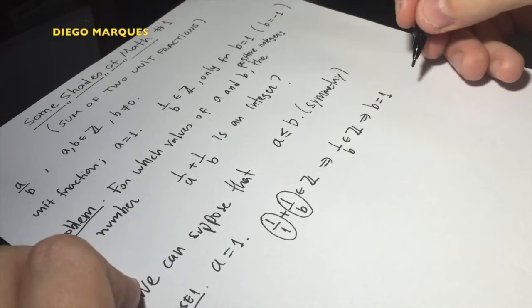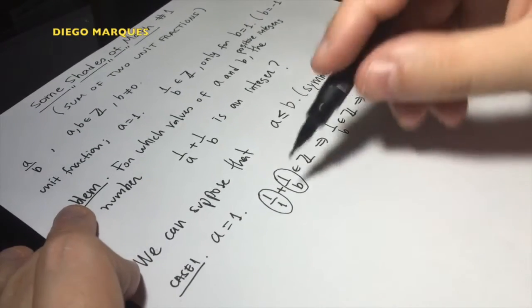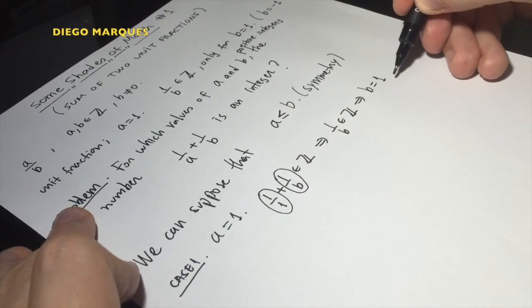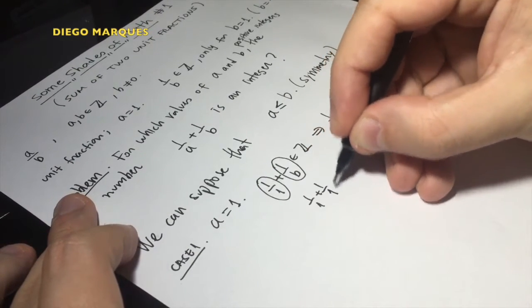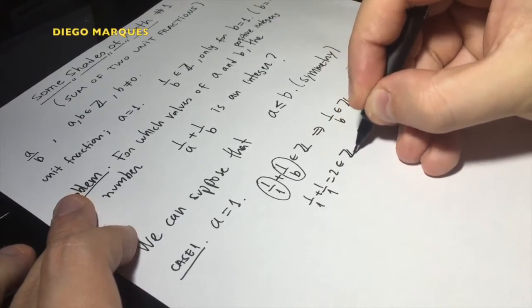And we know that if 1 over b is an integer, this implies that b is equal to 1. Recall that b is positive. So when a is equal to 1, b must be equal to 1, and so 1 over 1 plus 1 over 1 is 2, which is an integer.